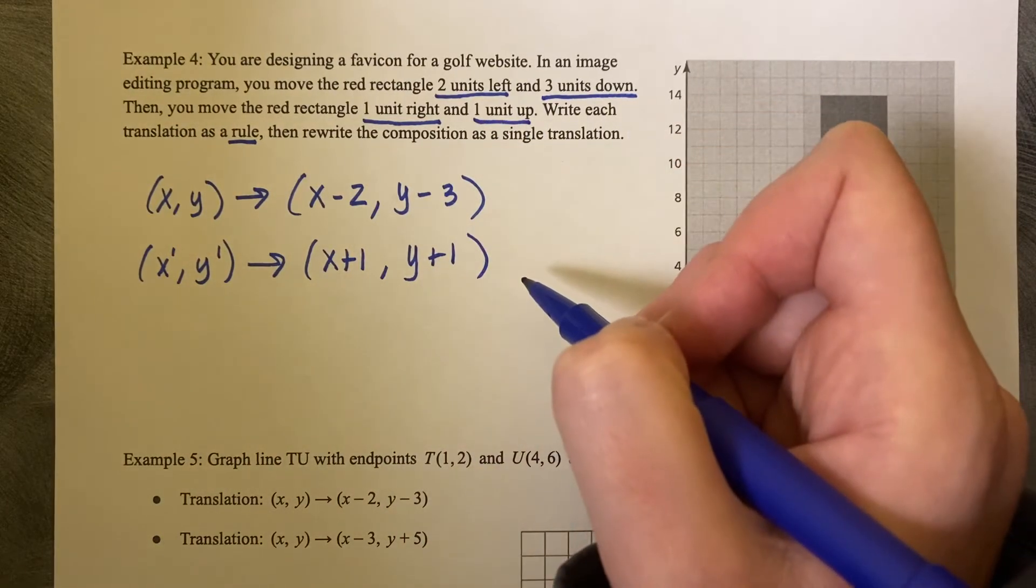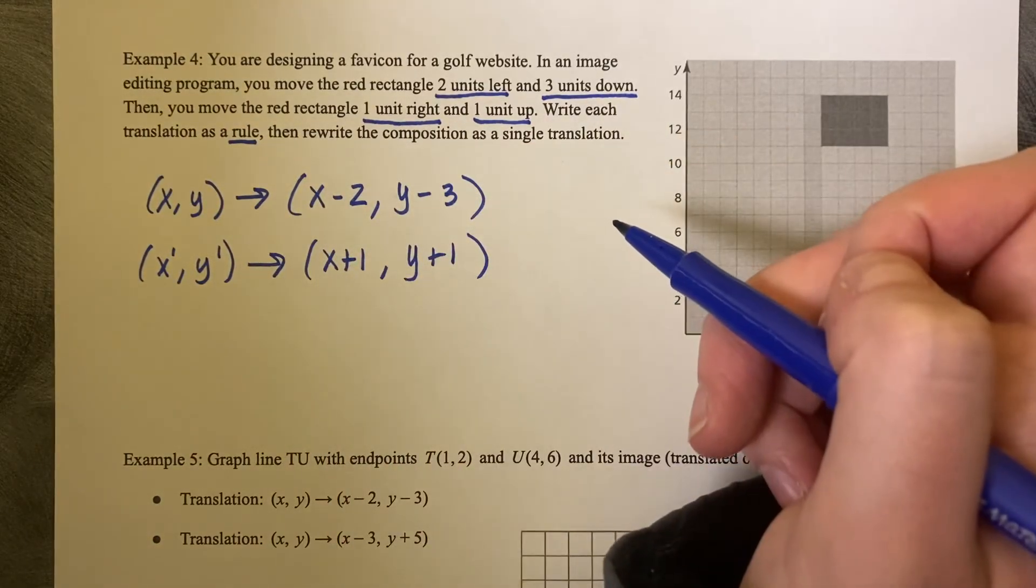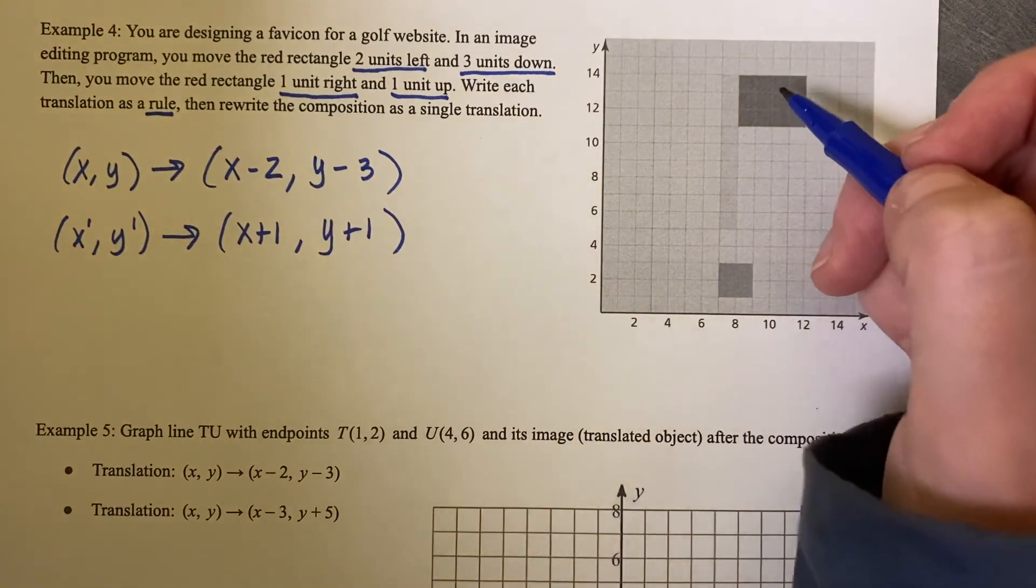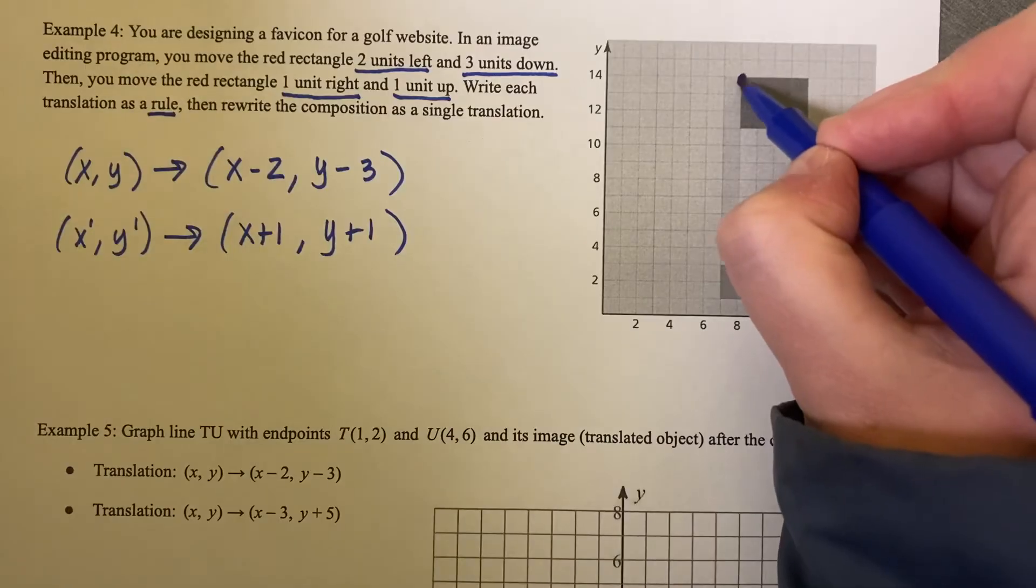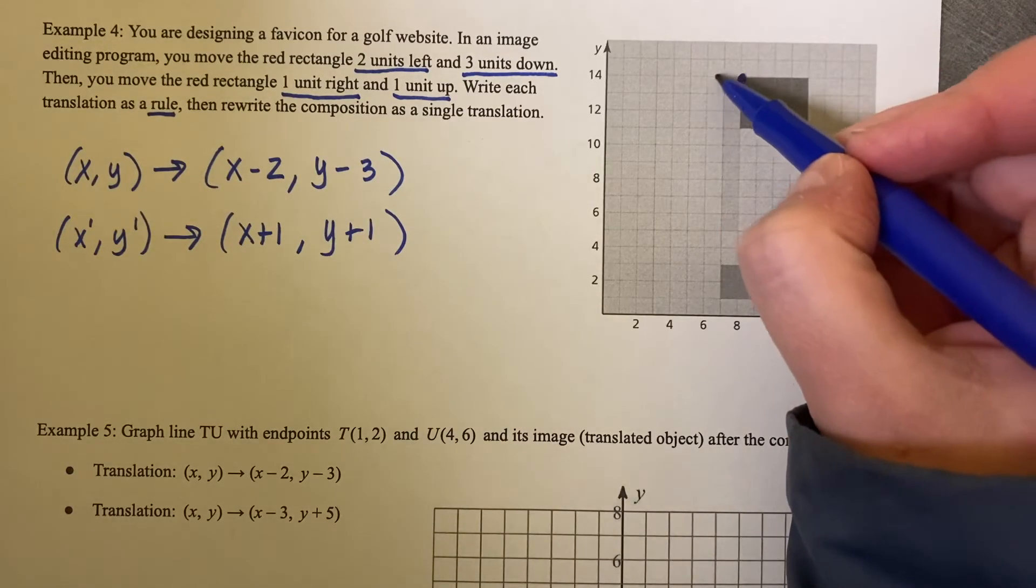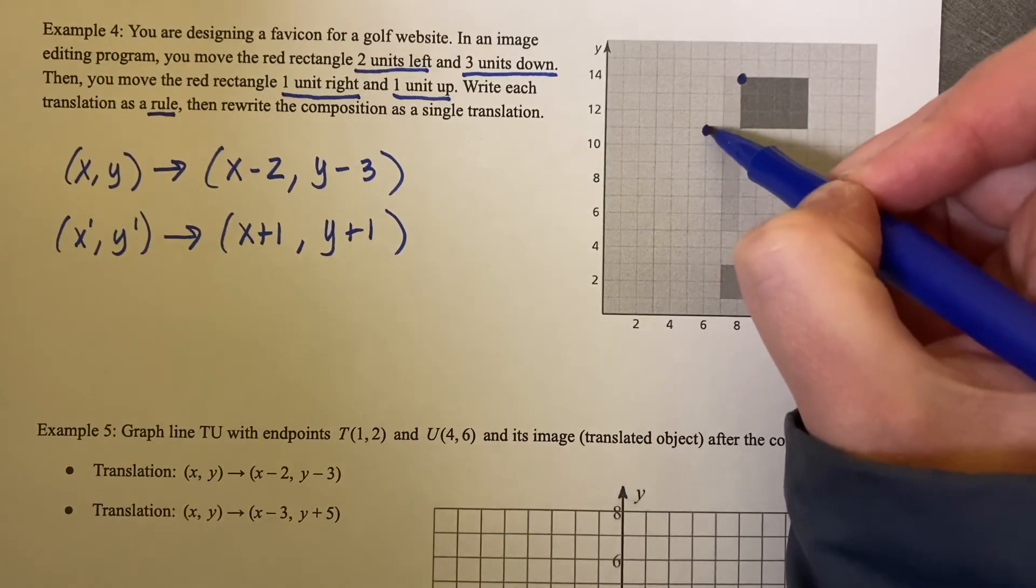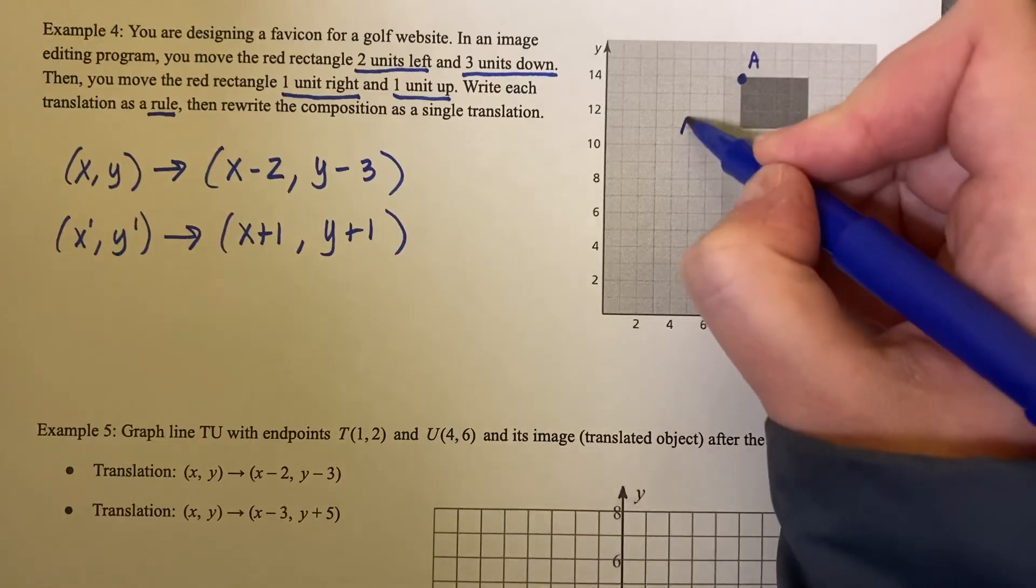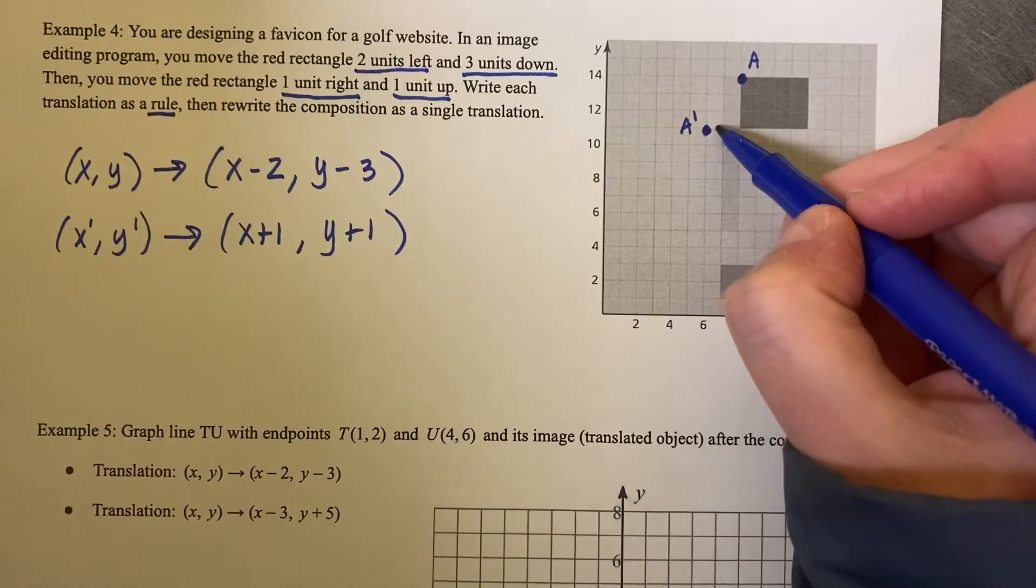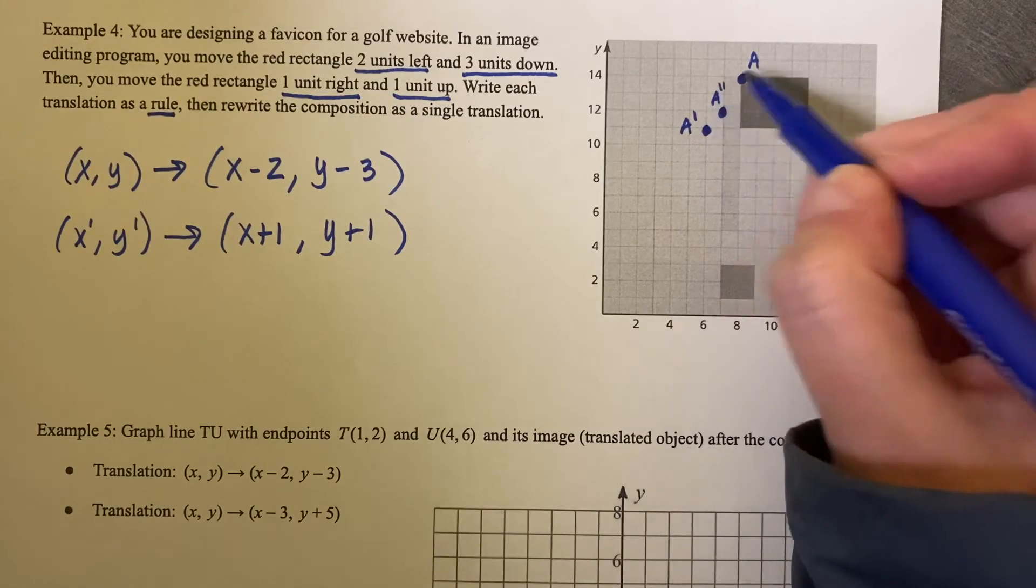And now we'd like to know if we started with a regular (X, Y), could we get to this final image by writing it as a single translation? So if we try this over on the grid, just with this one point, so let's just use one point at a time. So two units left and three units down. So let's call this A, and then this would be A prime. And then we want to use, move it one right and one up. A double prime.